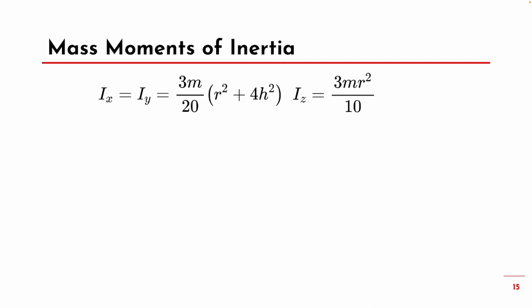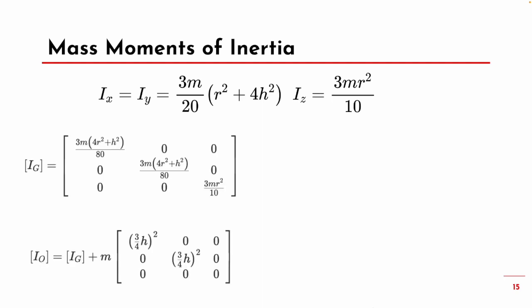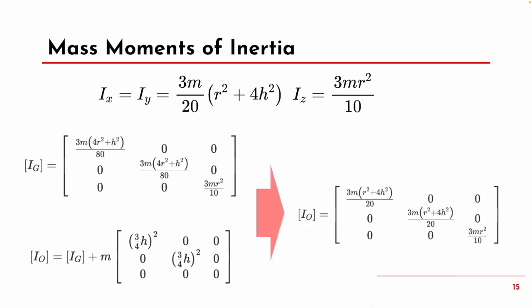Next, we're going to look at the mass moments of inertia of the top. Since we're using a cone as our geometry, we can find the existing equations for mass moment of inertia about x, y, and z. Since we have two planes of symmetry, Ix and Iy are the exact same equation. Plugging this into matrix form, we get our mass moment of inertia with reference to the center of mass, and then we find the mass moment of inertia referenced to our inertial frame using the parallel axis theorem.